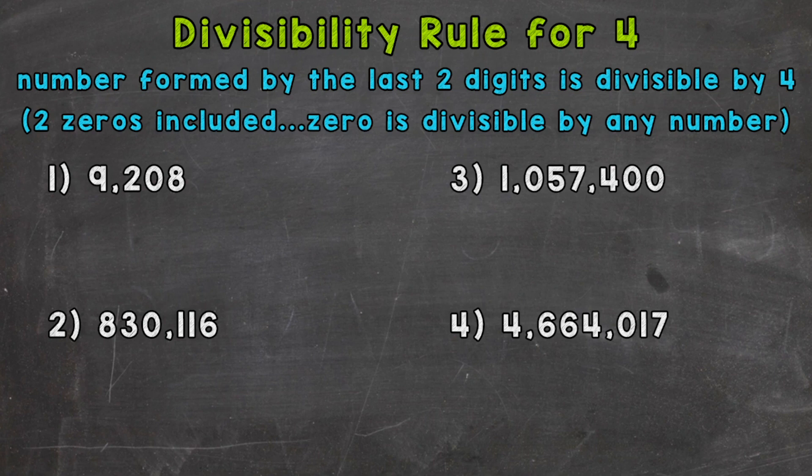we need to take a look at the number formed by the last two digits, and if that number is divisible by 4, then the original number is divisible by 4.